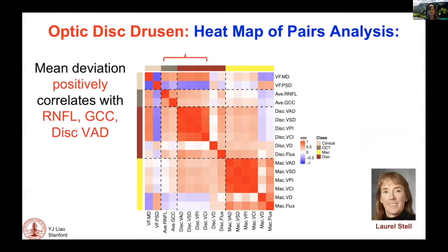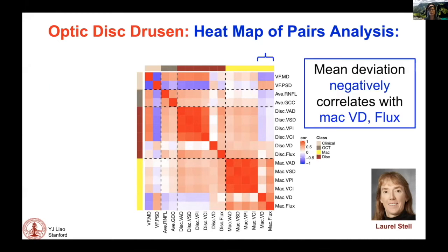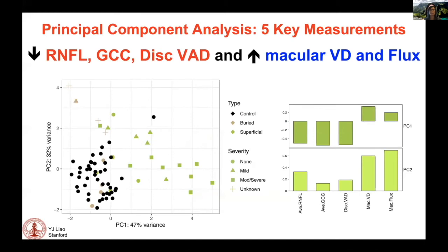We looked at all the measurements and performed a correlation matrix. The mean deviation on Humphrey visual field testing positively correlates with retinal nerve fiber layer, ganglion cell complex, and disc vessel area density. In contrast, the mean deviation negatively correlates with macular vessel diameter and flux. A principal component analysis identified five key measurements correlating with vision loss: decrease in retinal nerve fiber layer, ganglion cell complex, and disc vessel area density, and an increase in macular vessel diameter and flux.